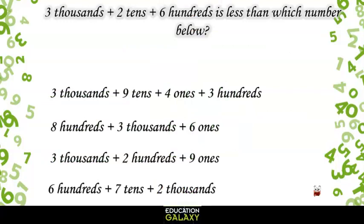Ooh, this one looks tricky. 3 thousands plus 2 tens plus 6 hundreds is less than which number below? Well, that would be a 3 in the thousand spot, 2 in the tens, 6 in the hundreds, and since there are no ones, a 0 in the ones spot. That gives us 3,620.